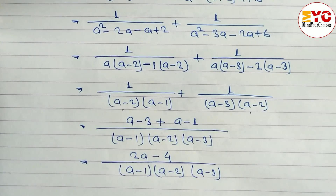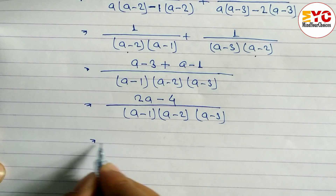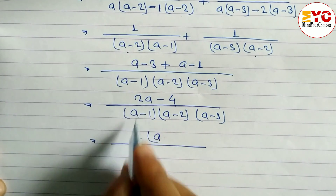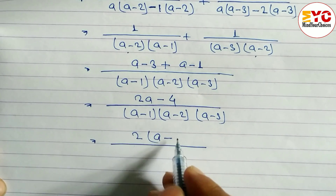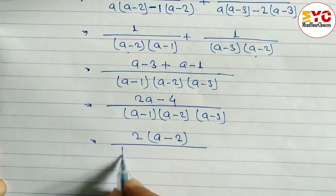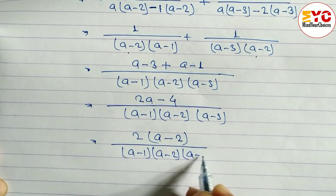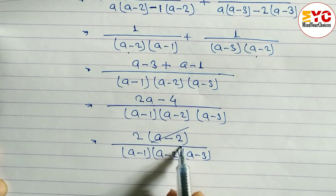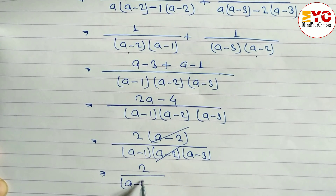Now we can factor the numerator. The common factor is 2, leaving a-2 — because 4÷2=2. So we have 2(a-2) over (a-1)(a-2)(a-3). We can see (a-2) cancels in numerator and denominator, and the final answer is 2/[(a-1)(a-3)].